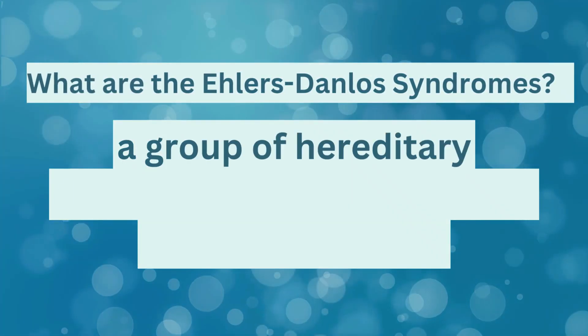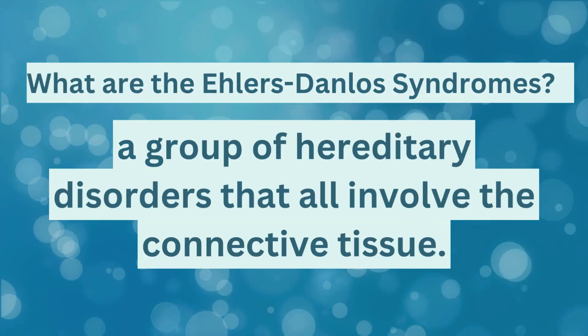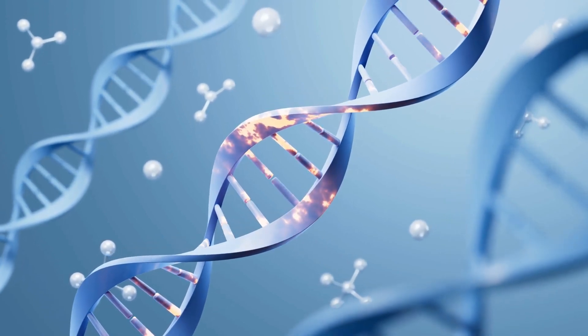You will often hear these abbreviated as EDS and HSD. The Ehlers-Danlos syndromes are a group of hereditary disorders that all involve the connective tissue. There are 14 different types with a wide range of differing presentations. The underlying genes causing 13 of these types are known, but unfortunately the genes underlying the hypermobile type, which is the most common type, are not yet known. The genes we know about affect the structural proteins of the connective tissue and the enzymes involved in the processing of these proteins.